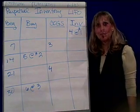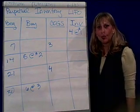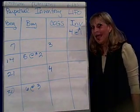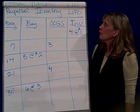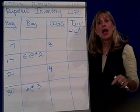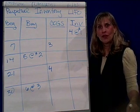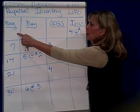Inventory methods. We're doing perpetual, and we're now going to do LIFO, which says the last units to come in are the first units sold. So let's see how that changes the mix.